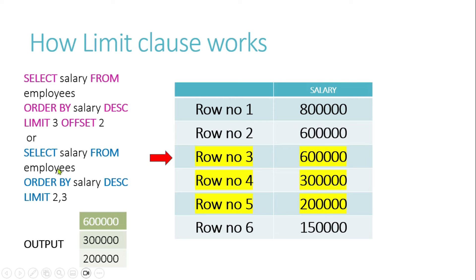The LIMIT clause can also be written as: SELECT salary FROM employees ORDER BY salary DESC LIMIT 2, 3. Here the first parameter (2) is the offset — it fetches records after the second row — and the second parameter (3) defines how many rows to fetch. So it will fetch 3 records starting from the third row.